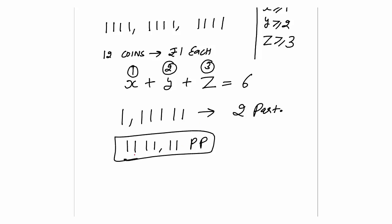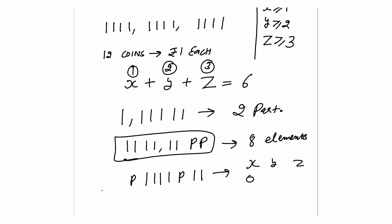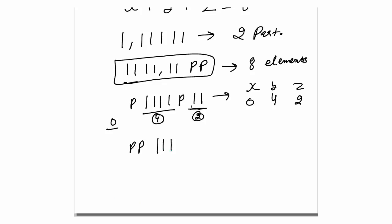The arrangement of these 8 elements — 6 ones and 2 partitions — will give me the distributions required so that x plus y plus z equals 6. For example: p, 1 four times, then p, then 1 two times means x equals 0 (left of partition), y equals 4 (between partitions), z equals 2 (right of partition). Another arrangement — 2p then 6 ones — means x equals 0, y equals 0, z equals 6.